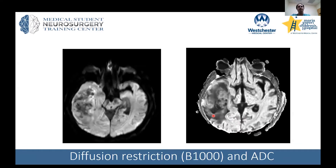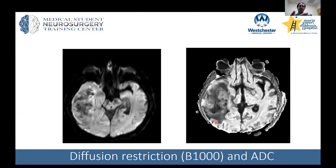Another sequence commonly used is diffusion restriction, usually labeled as B1000. It's very good for looking at strokes in the brain and any pathology where the lesion is very dense — such as high-grade tumors like medulloblastoma, where cells are packed tightly together and appear bright. Infection also appears bright on diffusion restriction. It's important to check the ADC, the converse of diffusion restriction. A lesion bright on diffusion restriction should be dark on ADC. If it's bright on both, that suggests T2 shine-through, giving a false diffusion signal.